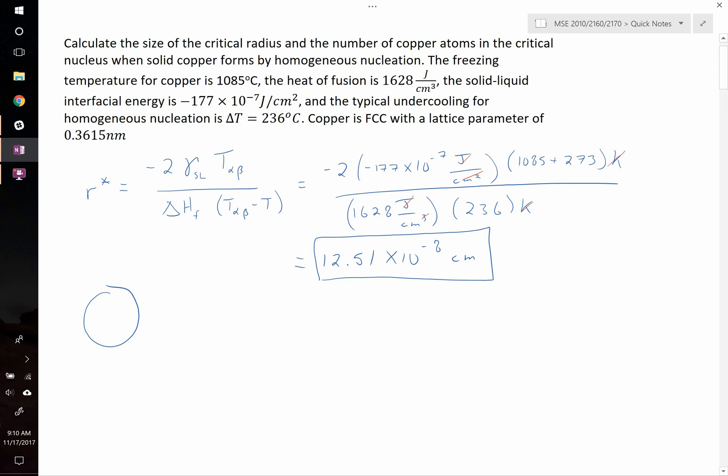It's spherical, and it has a radius r star. Therefore, it has a volume of 4 thirds pi r cubed, which, when we plug in numbers, this is equal to 8,200 times 10 to the negative 24th centimeters cubed.